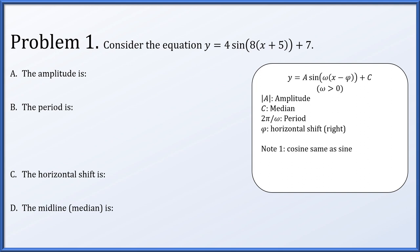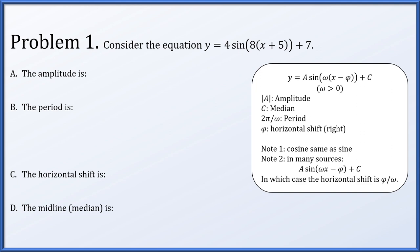If this was a cosine instead of the sine, it would be exactly the same. Also, in many sources it's written as omega x minus phi, which is slightly different than the form at the top. If you have it in this form, notice the horizontal shift would be phi over omega. If you were to factor omega out of the quantity inside the sine function, you would have omega times the quantity x minus phi over omega.